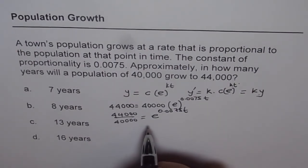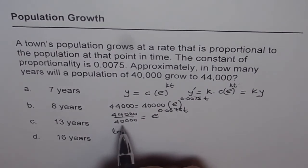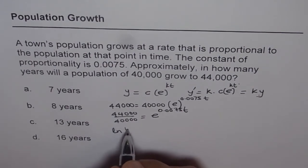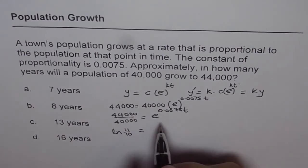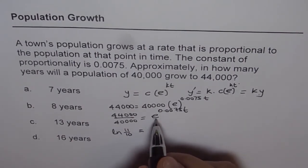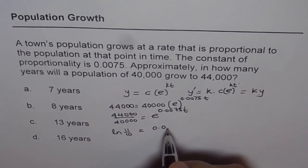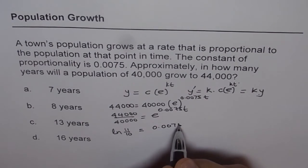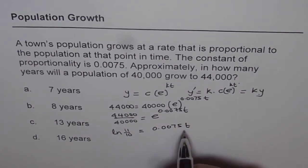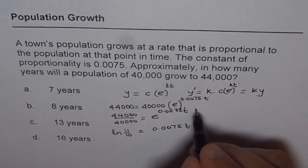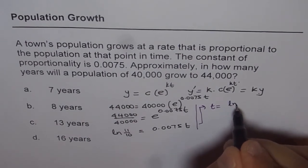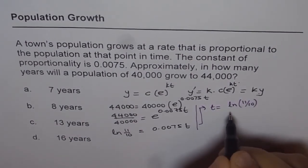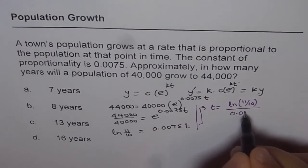So we can take ln on both sides. This simplifies to, let me write this as divide by 4, which is 11 over 10, equals to, when we take ln here, we get 0.0075 t. And therefore, we can find t from here. So t is equal to ln 11 over 10 divided by 0.0075.